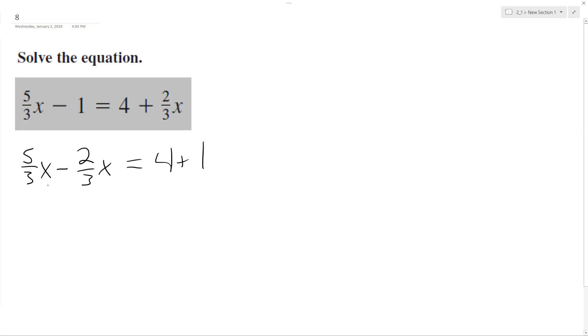5/3 minus 2/3 - the nice thing is they have the same common denominator, so it's just 5 minus 2, which is 3/3 x. Then we have equals 5, since 4 plus 1 equals 5. 3/3 is 1, so it's just x equals 5.